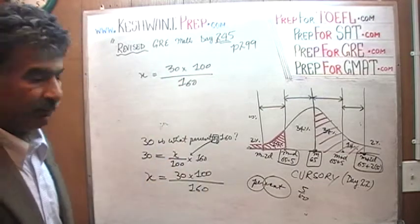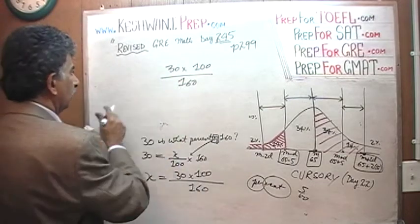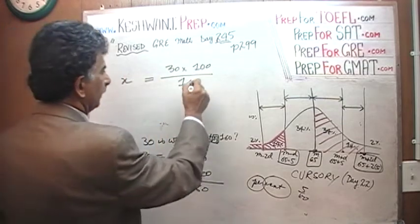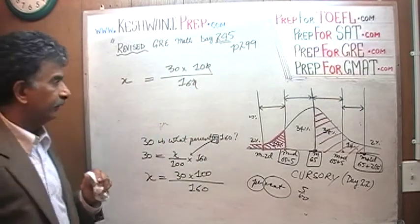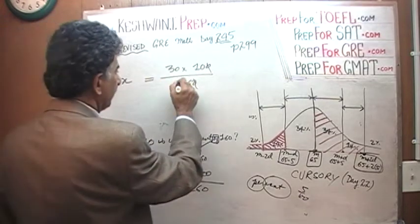X equals 30 times 100 over 160. And remember, they used the word approximate. So we don't have to go gung-ho. We don't have to waste our time trying to figure out the exact answer. Divide both top and bottom by 10. So that takes 0. That's 0.